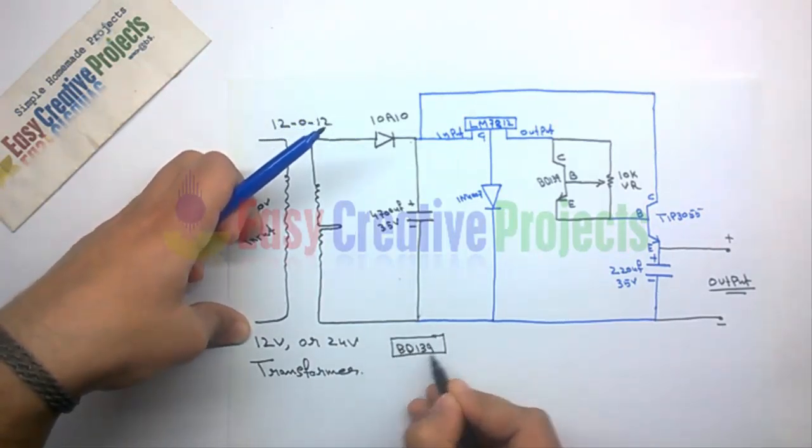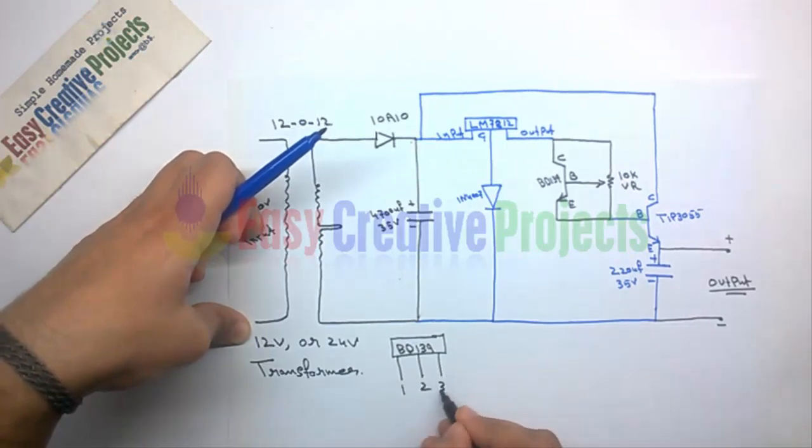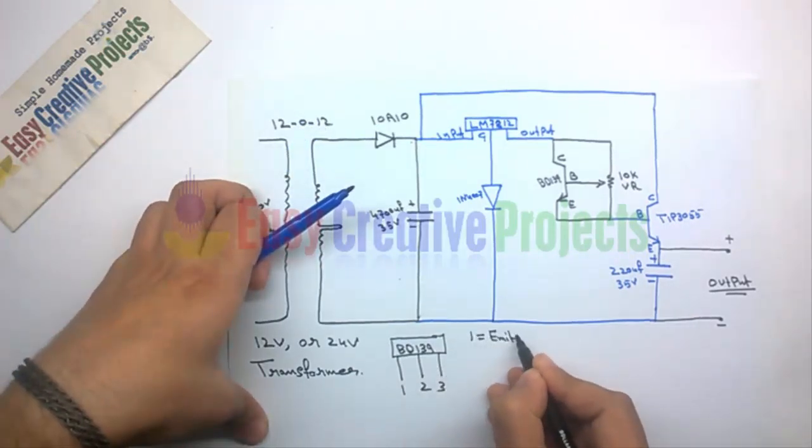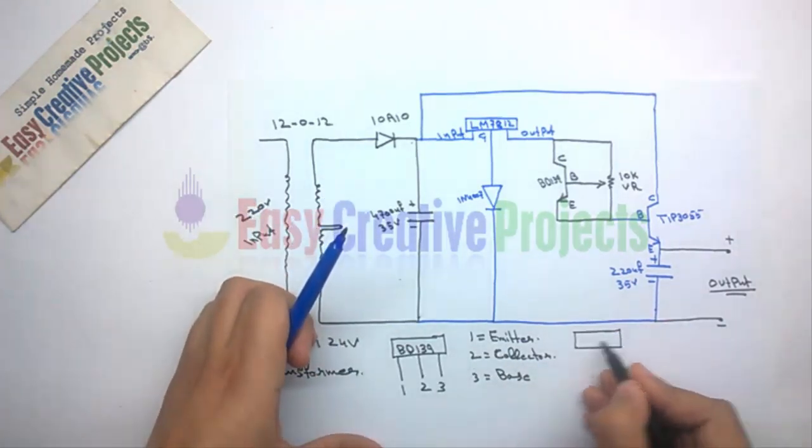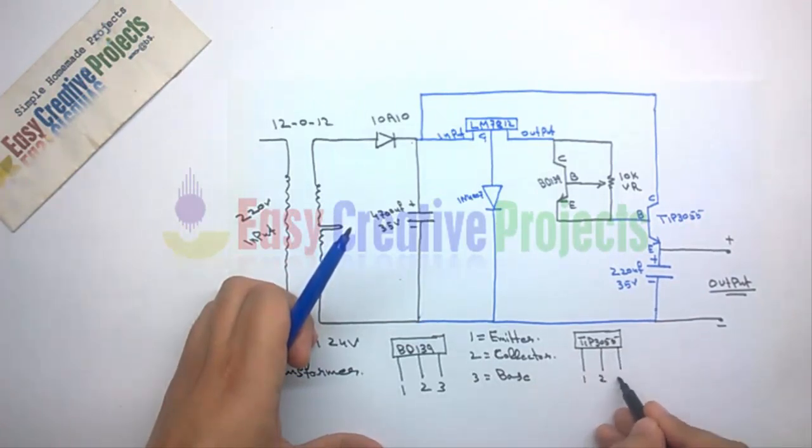BD139 has 3 pin: first emitter, second collector, and third base. TIP3055 has 3 pin: first base, second collector, and third emitter.